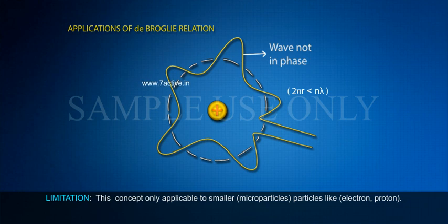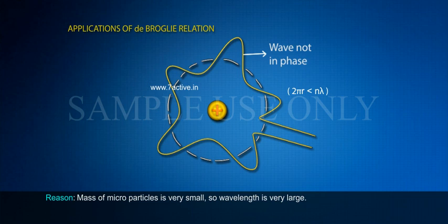Limitation: This concept is only applicable to smaller particles like electron and proton. Reason: The mass of such particles is very small, so their wavelength is very large.